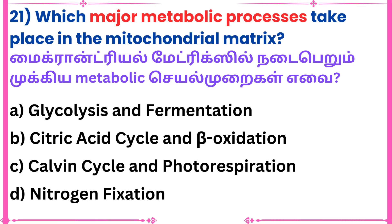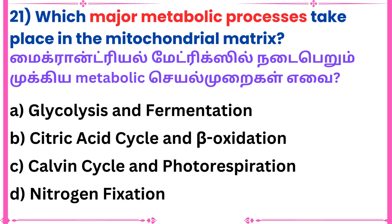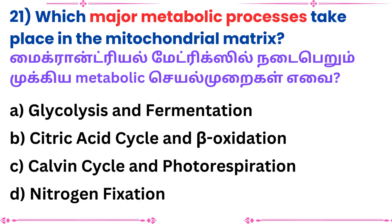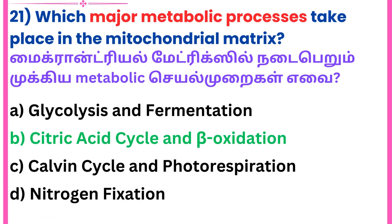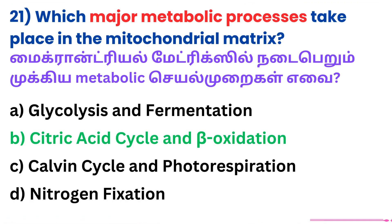Twenty-first question: Which major metabolic process takes place in the mitochondrial matrix? Answer: Citric acid cycle and beta oxidation.